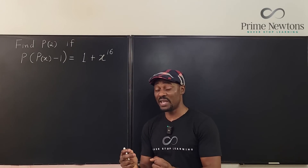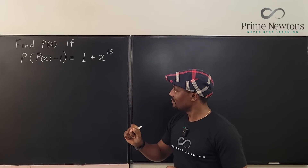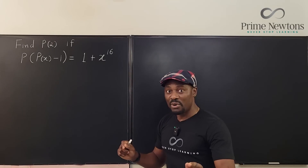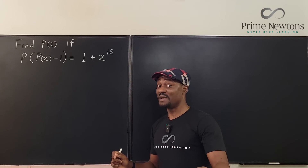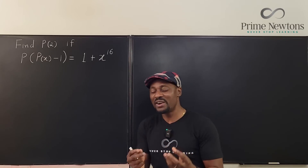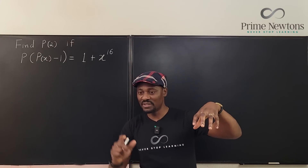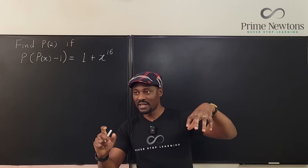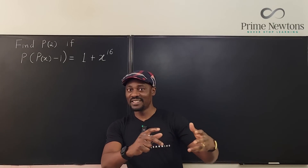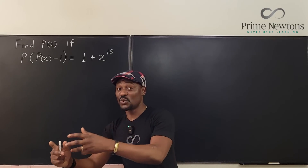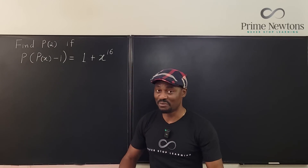So is there a way we can find p of x itself? Now because it's a polynomial, life is a lot easier than you can imagine. There's a very basic principle: when you compose a polynomial with itself, the degree of the composition is the square of the degree of the original polynomial.